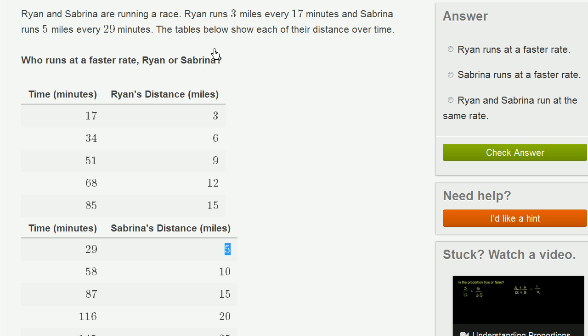The tables below show each of their distance over time. Who runs at a faster rate, Ryan or Sabrina? These are hard to compare directly—three miles every 17 minutes versus five miles every 29 minutes. What you want to do is find a point on this table where the ratios between time and distance are easier to compare.